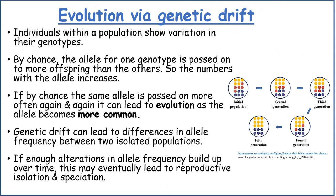Individuals within a population show variation in their genotypes. By chance, the allele for one genotype is passed on to more offspring than others, so the numbers with that allele increase. If by chance the same allele is passed on more often again and again, it can lead to evolution as the allele becomes more common. Genetic drift can lead to differences in allele frequency between two isolated populations, and if enough alterations in allele frequency build up over time, this may eventually lead to reproductive isolation and speciation.